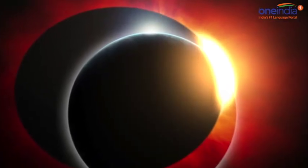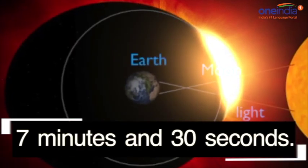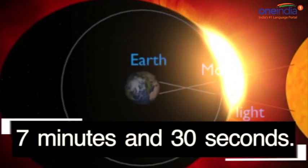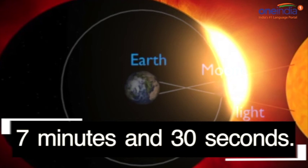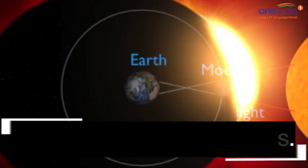A total solar eclipse can last a maximum of 7 minutes and 30 seconds. Almost identical eclipses occur after 18 years and 11 days, known as the Saros Cycle.